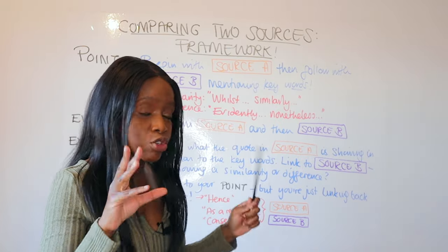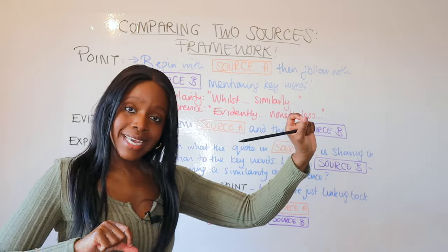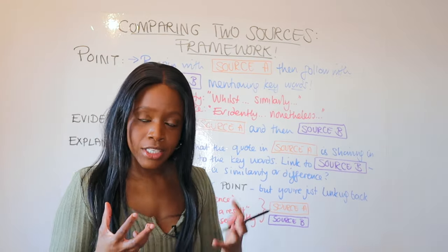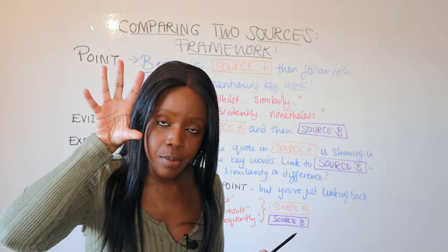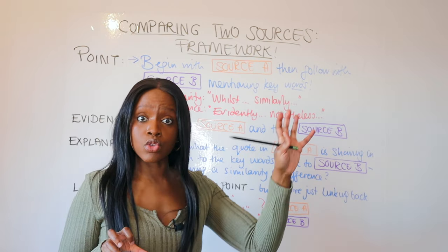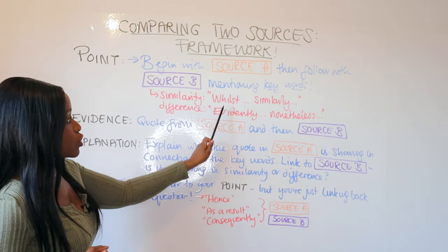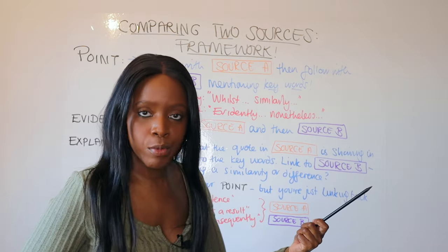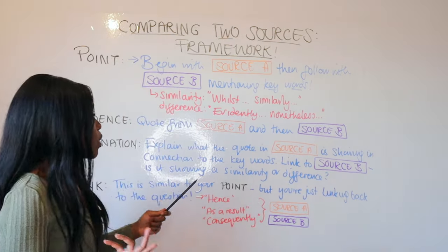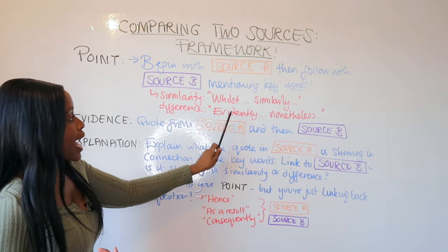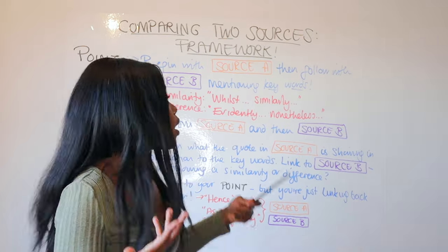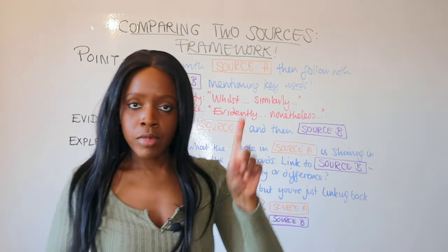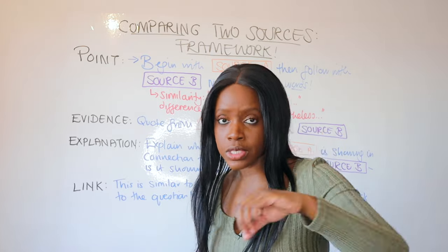This opening point is simply saying 'source A is similar to source B' or 'source A is different to source B.' You don't add any quotations at this stage. However, you want to add useful keywords that signpost to your examiner that you are talking about similarities or differences. If you're talking about similarities, you say: 'Whilst source A shows [x], similarly, source B shows [x].' If you want to talk about differences, you begin: 'Evidently, source A illustrates [x]. Nonetheless, source B illustrates [x].' That's step number one when comparing two sources for question two or four.